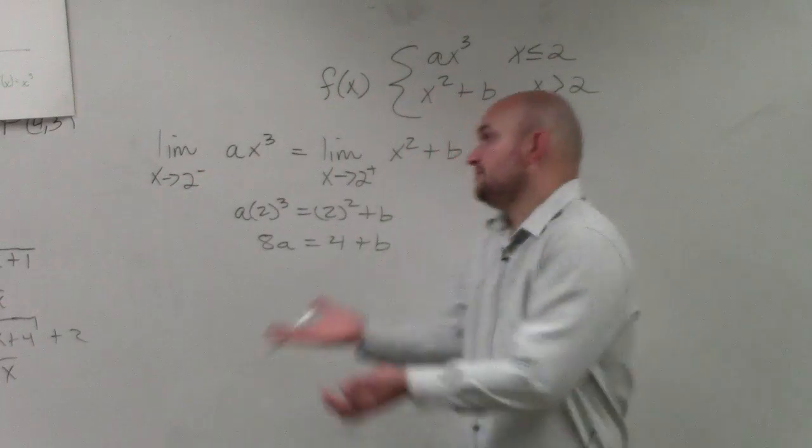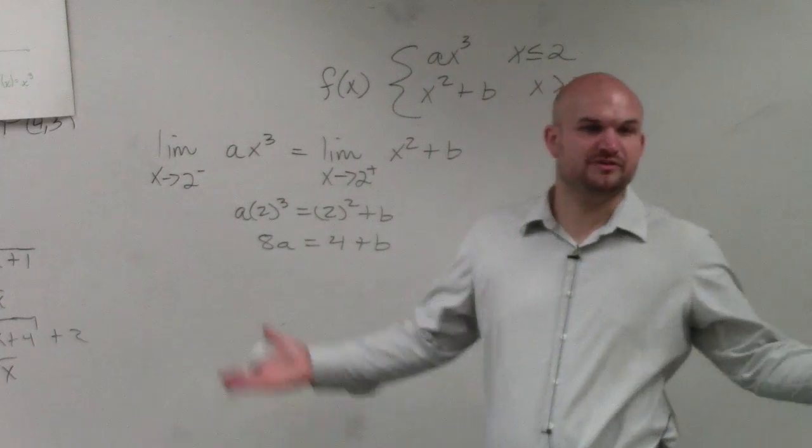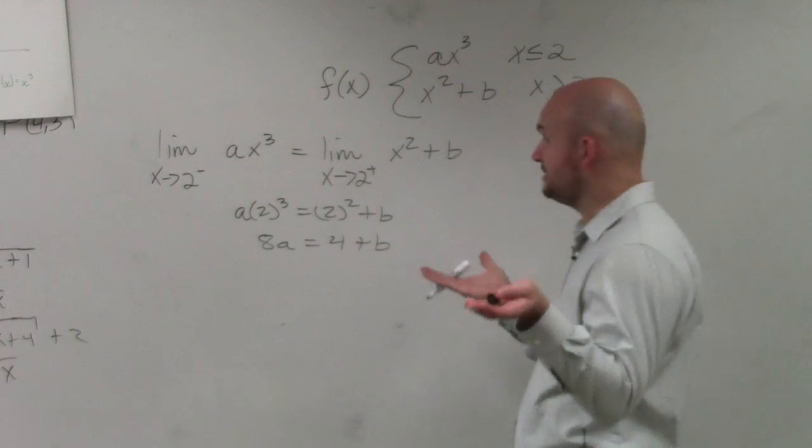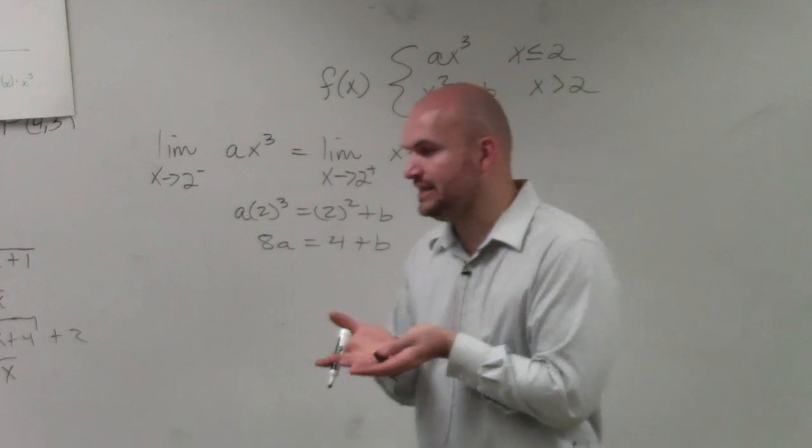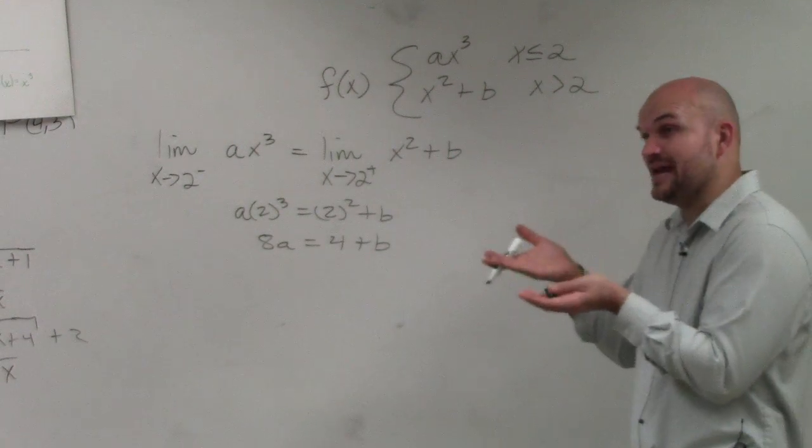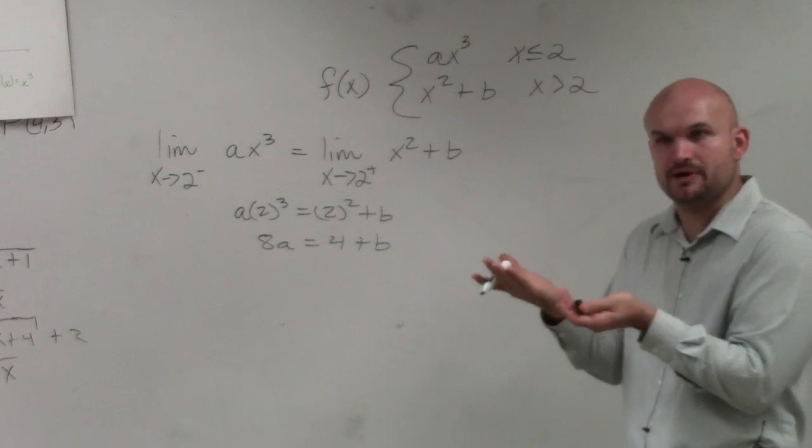Now, again, we can't solve for our values because we have two variables. So we have to set up another equation. And again, the limits can be equal, but the limit can be the same but there still can be a discontinuity, such as like a hole or something. Right?